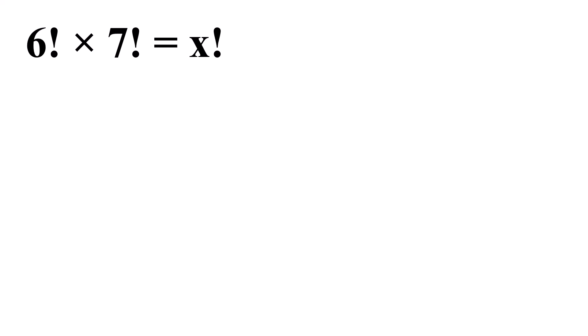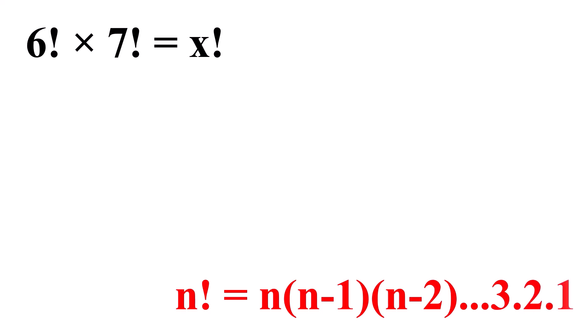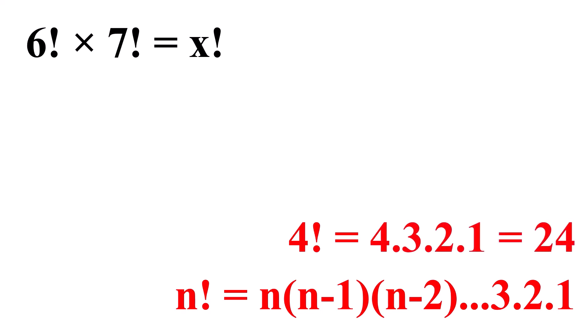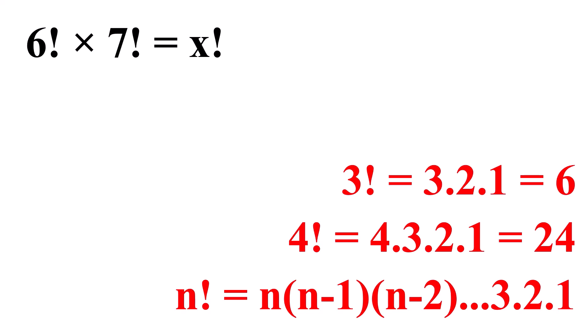We know n factorial is equal to n times n minus 1 times n minus 2, up to 3 times 2 times 1. For example, 4 factorial is equal to 4 times 3 times 2 times 1, which is equal to 24. Similarly, 3 factorial is equal to 3 times 2 times 1, which is equal to 6.